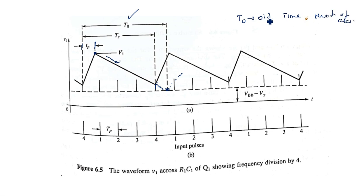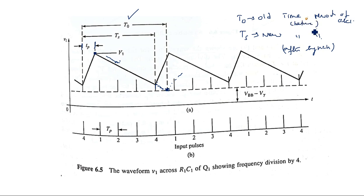Before synchronization the time period is t0, and after synchronization the new time period is ts. The capacitor's minimum discharge voltage is Vbb minus V-gamma, and the pulse amplitude is sufficient to reach this level. This continues for every four cycles of the input signal, giving a frequency division by four.